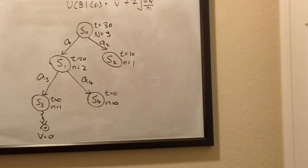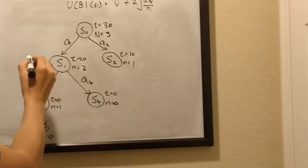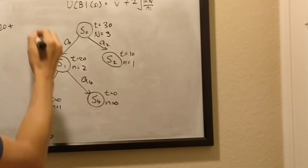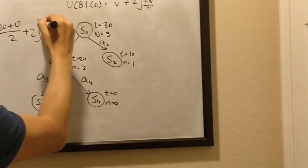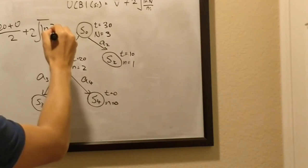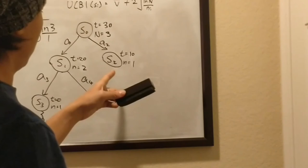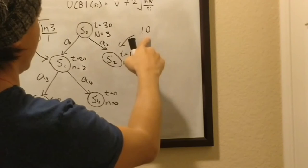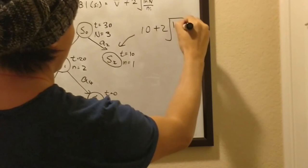So, at this point in time, the value being at state 1 can be calculated by the average value, so it should be 20 plus 0 divided by 2, which is the average, plus 2 times ln of 3 divided by the n here, which is 1. And then the value over here is only 10, sorry, this is state 1, and this is state 2, so right now it's just 10 plus 2 times ln of 3 divided by 2.